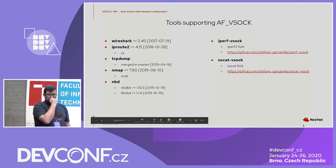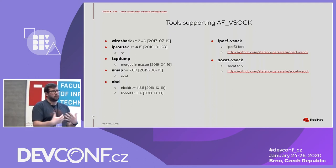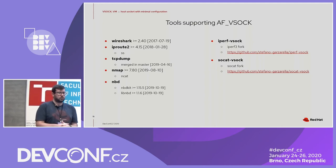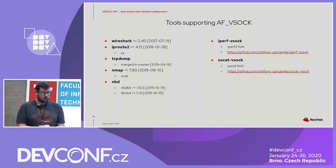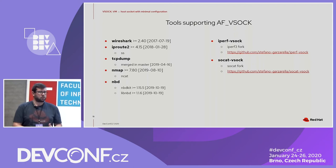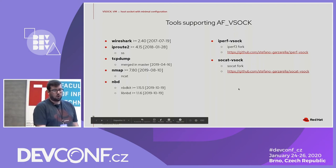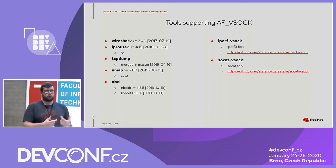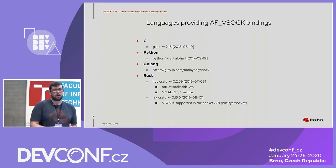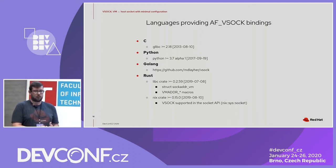Now let's talk about tools and languages that support VSOCK. Most are merged upstream. These useful tools introduced VSOCK support in recent years: you can dump traffic statistics, test host-guest communication, access block devices using NBD over VSOCK, measure performance with iperf, or do things with socat — for example, concatenating a TCP socket with a VSOCK socket. For developers, several languages provide bindings for the VSOCK address family.